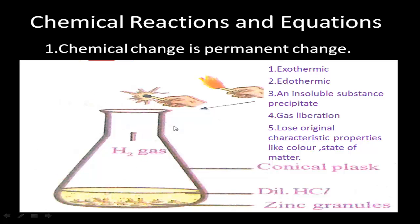In this conical flask, some zinc granules are there. After adding dilute HCl, hydrogen gas is evolving. To check whether the evolving gas is hydrogen, we keep a burning matchstick near the mouth of the conical flask. After some time, if the matchstick burns out, the evolving gas is hydrogen gas. If it does not burn, the evolving gas is not hydrogen gas. The reactants here are zinc granules and dilute HCl, and the products are hydrogen gas and zinc chloride.